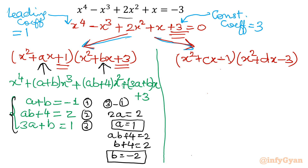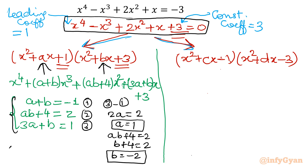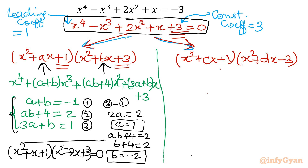So the quartic equation of degree 4 is converted into two brackets, each quadratic in nature. The factorization is (x² + x + 1)(x² − 2x + 3).